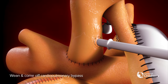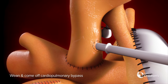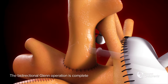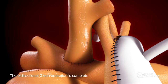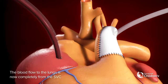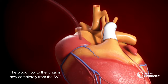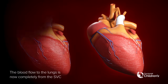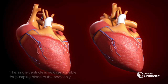Wean and come off cardiopulmonary bypass. The bidirectional Glenn operation is complete. Blood flow to the lungs is now completely from the SVC, and the single ventricle is now responsible for pumping blood to the body only.